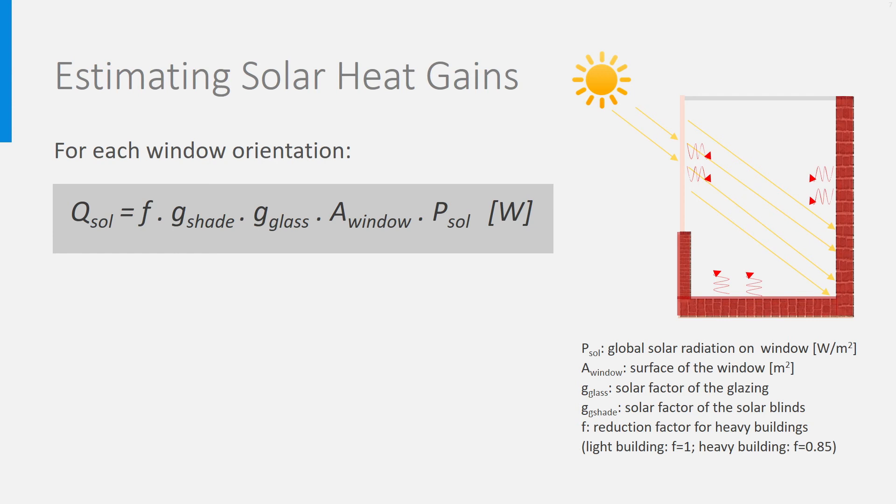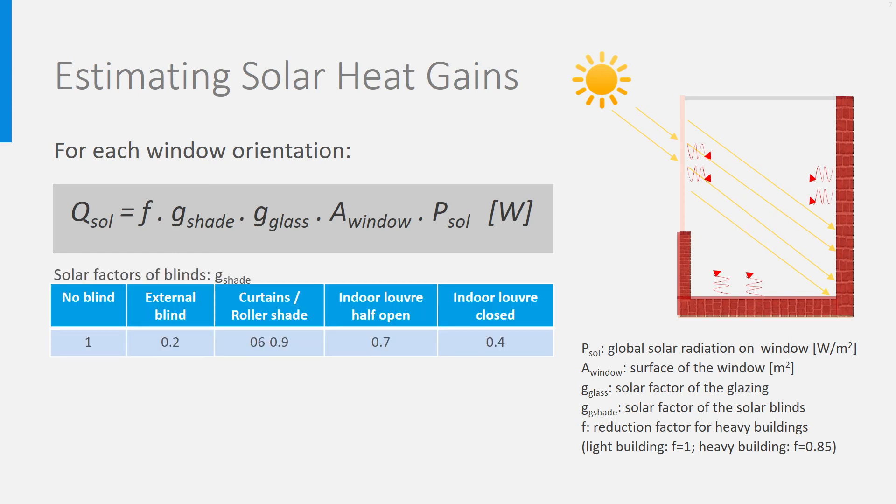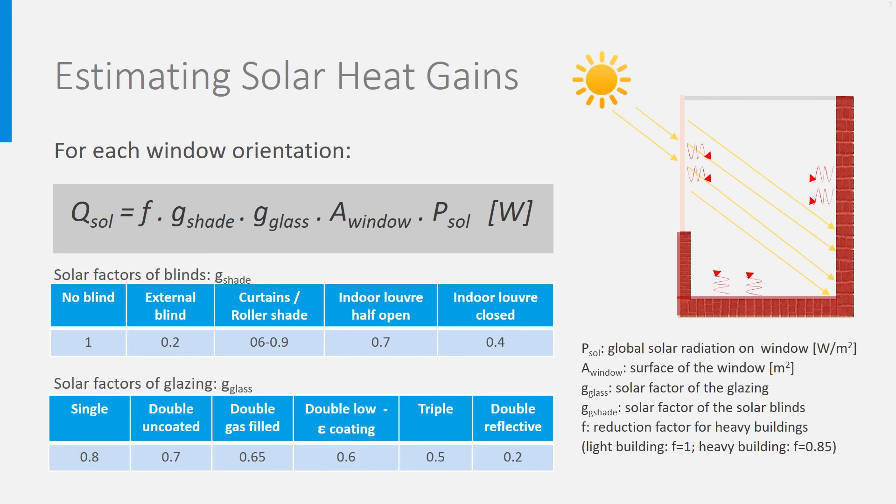You see in the first table some typical values of solar factors of blinds, and in the second table, some typical values of solar factors of different types of glazing. And of course, if there are windows on different facades, you must calculate the solar gains through each window and sum them up to get the total solar gain inside the building.